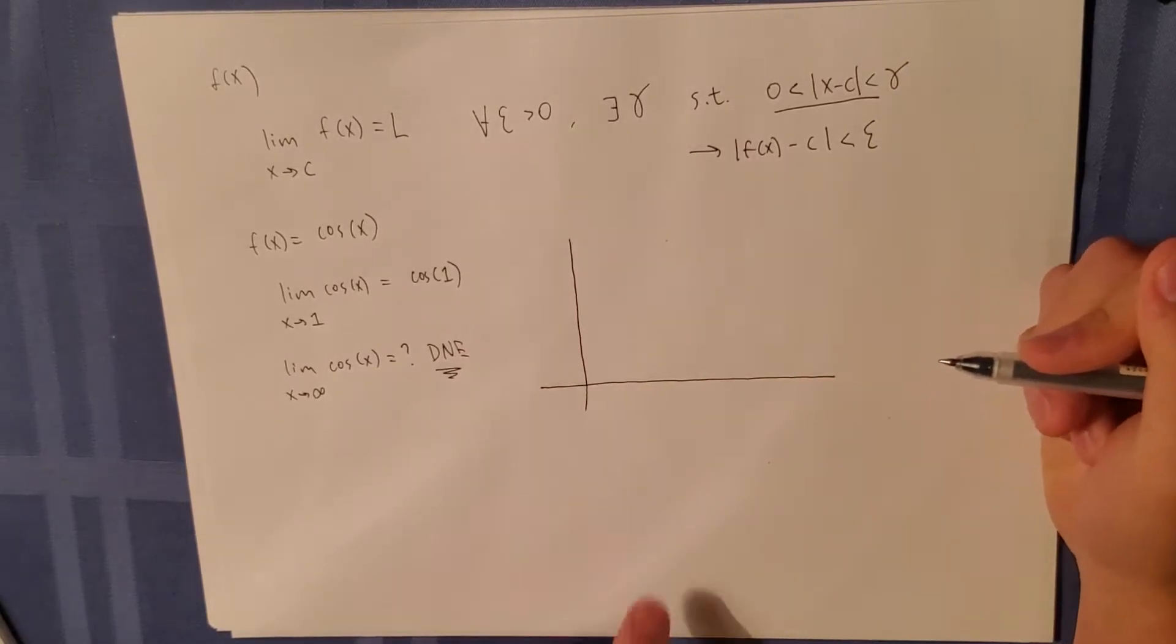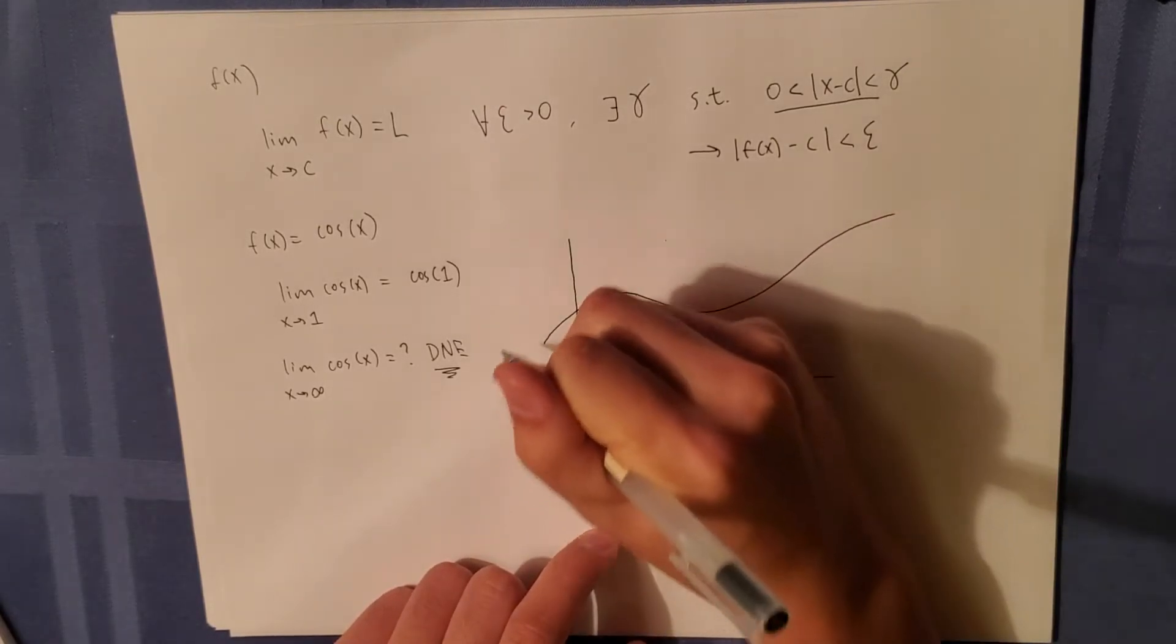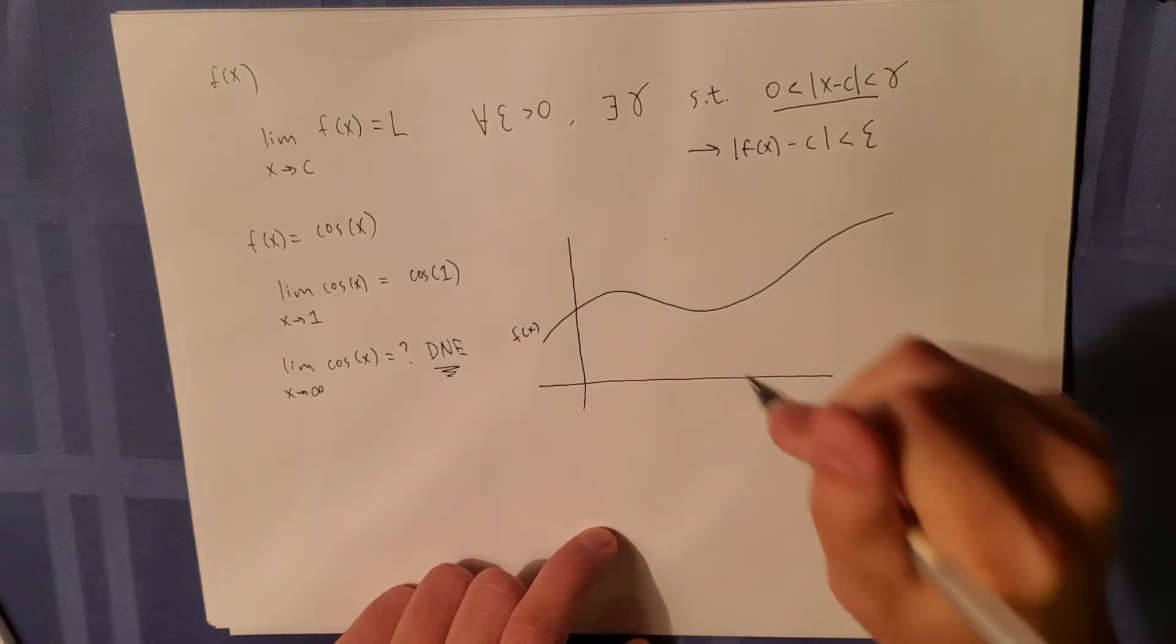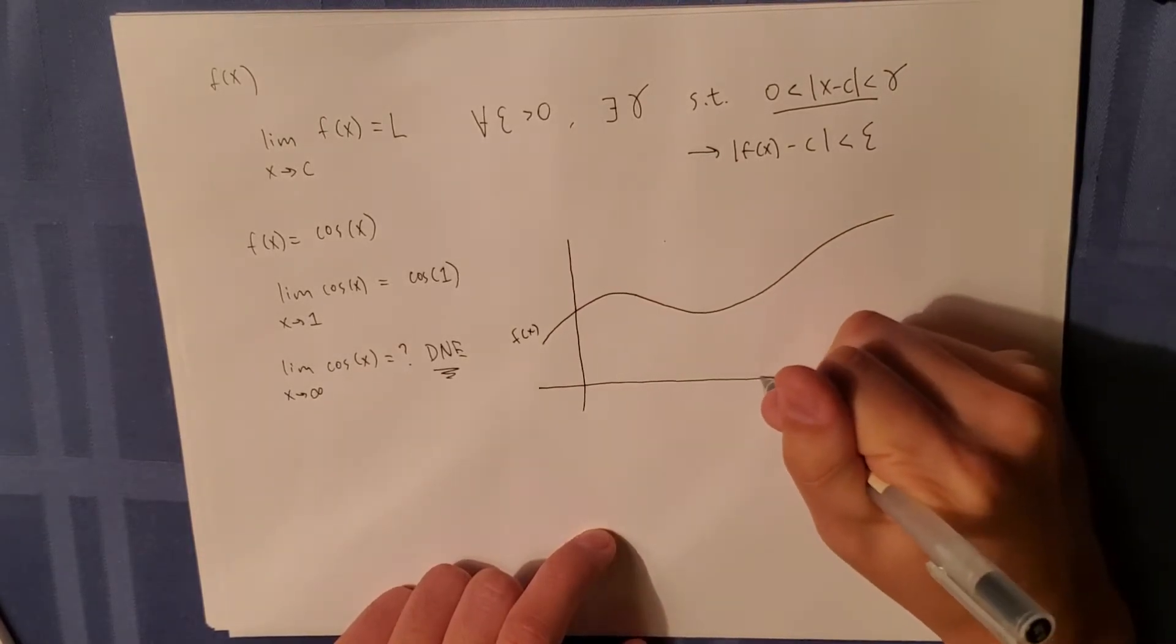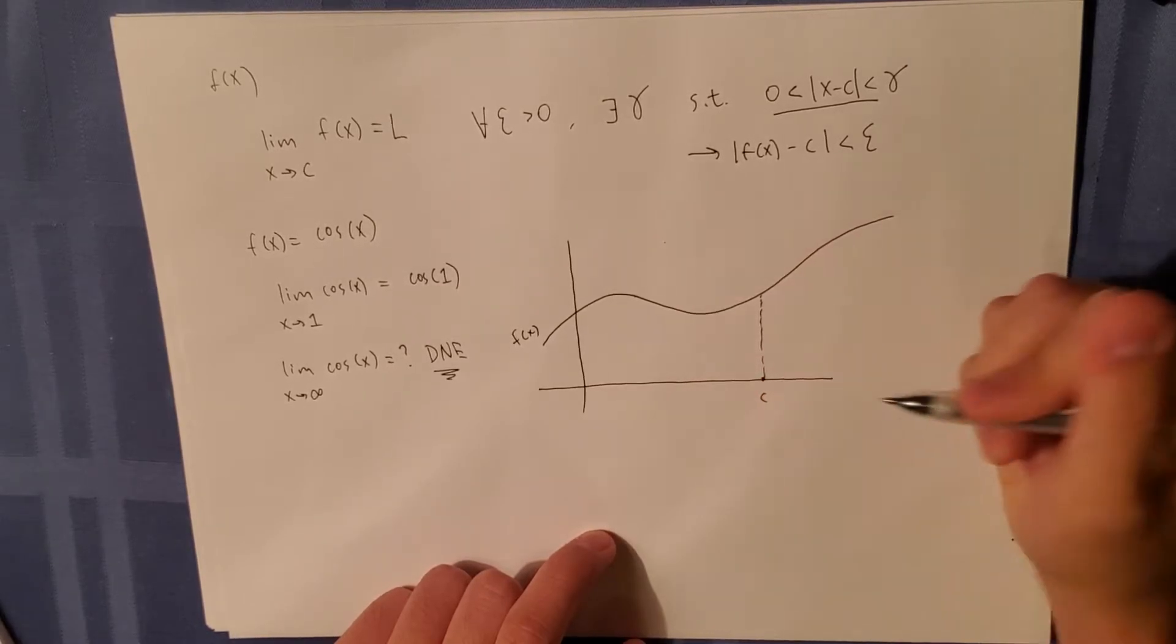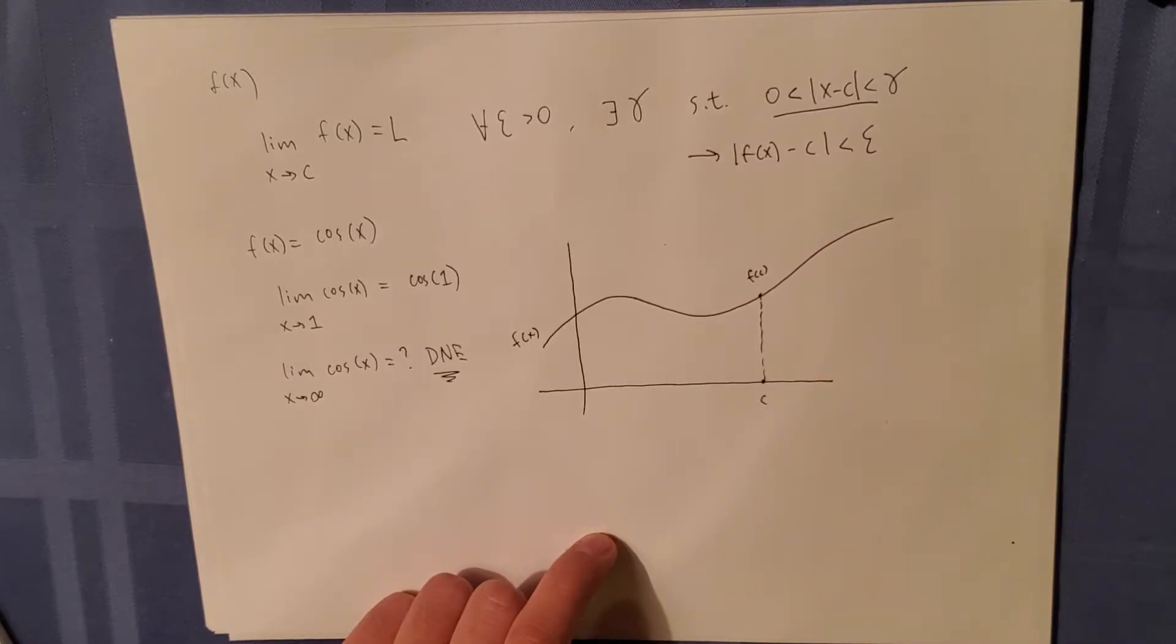Say we have a function f, and our c is right here. So this would be f of c, right?